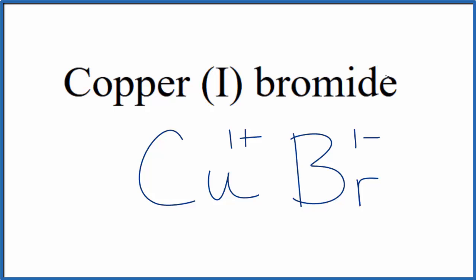So copper 1 bromide is a neutral compound, it doesn't say ion after it, and since this is a transition metal and we have a non-metal, these charges need to balance out, give us a net charge of zero.